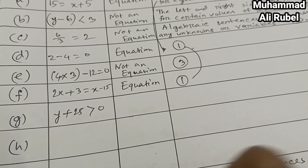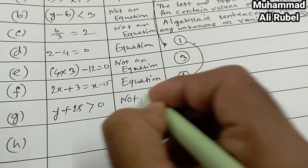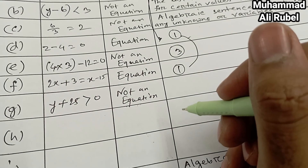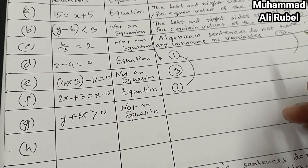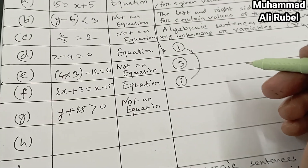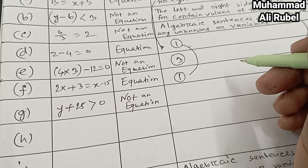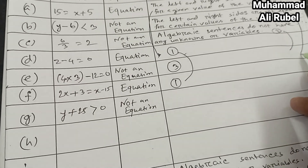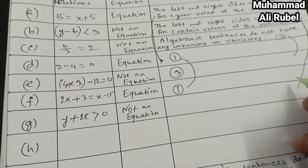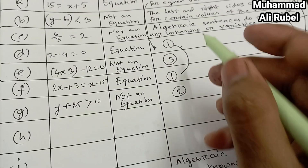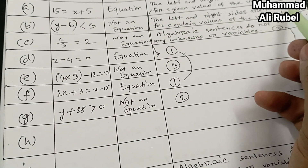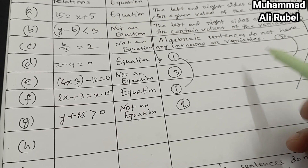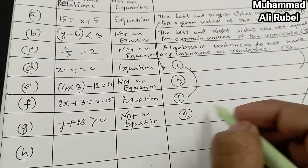Item g: y plus 25 greater than 0 — it is not an equation. We write reason number two: the left and right sides are not equal for certain values of the variable.